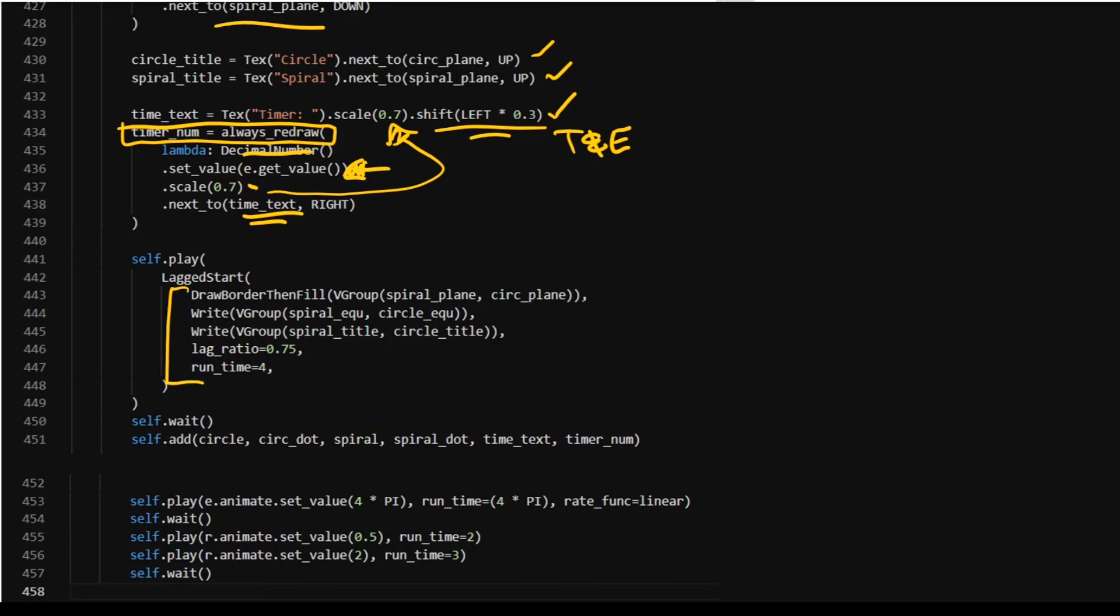Then I play everything out because a lot of this is just dependent on some value trackers. We lag start. We get some stuff played out there. I add this stuff here, all the stuff which is dependent on my value trackers, and then run them.